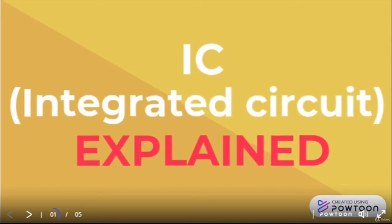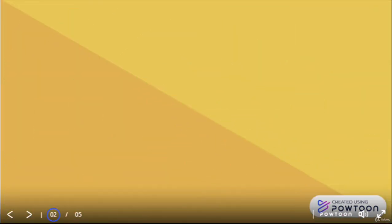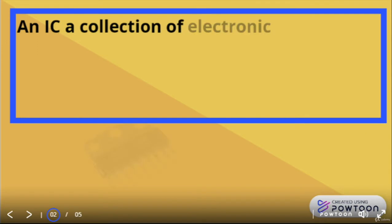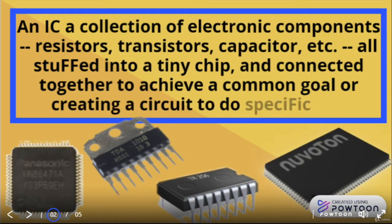IC — integrated circuits — explained. In this video I'm going to explain ICs: what IC stands for, the construction of the IC, the polarity, and how they work in the circuit. An IC is a collection of electronic components — resistors, transistors, capacitors, etc. — all stuffed into a tiny chip and connected together.